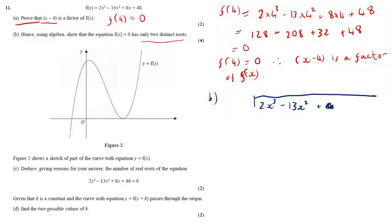Oh, sorry, I've written the wrong thing. That should be plus 8x. And so when we are doing this sort of algebraic long division, we're asking how many x's from the x's go into 2x cubed, which is 2x squared. And then we multiply across. So we do 2x squared times x and 2x squared times negative 4.